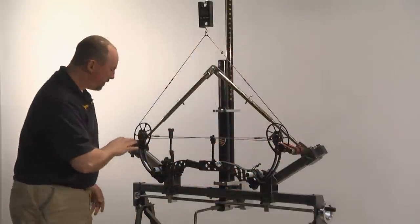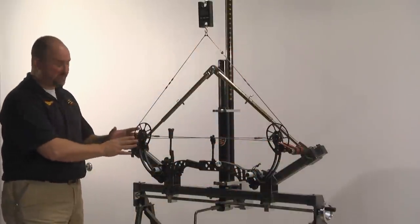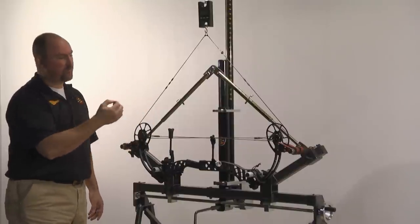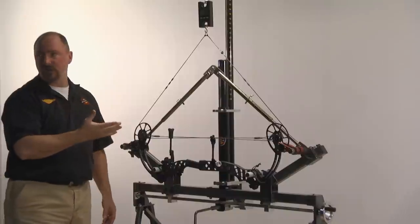You never want to press a bow past its full draw position. Here we're just simply using it as stops to allow us to relax the bowstring, remove the cams, or remove the string from the cams, check the timing, and replace it.